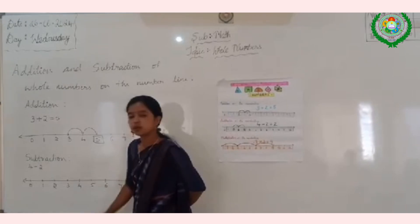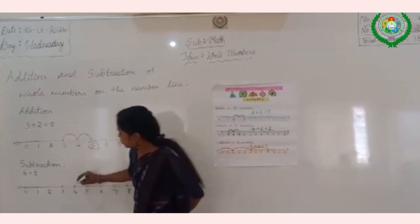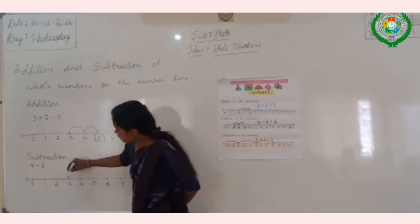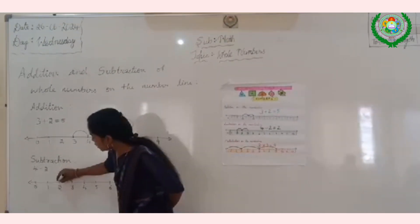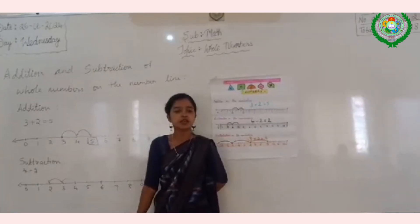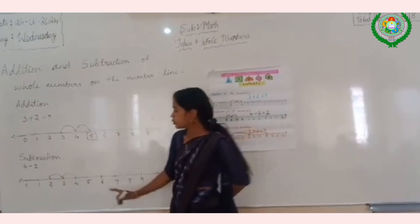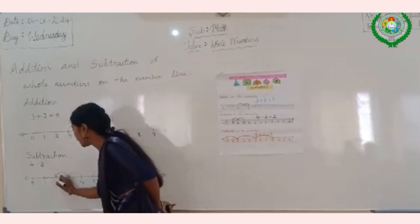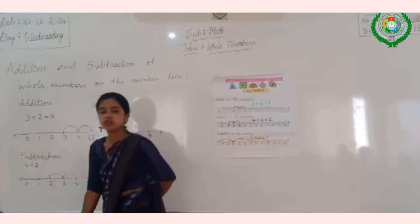Let us subtract the number 2 from 4. We are going to move two numbers to the left side of the number line. We will be able to find out the subtraction of 4 minus 2. Since we have already moved two numbers on the left side of the number line, what is the number you are getting?